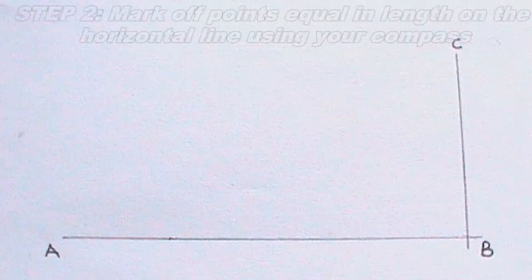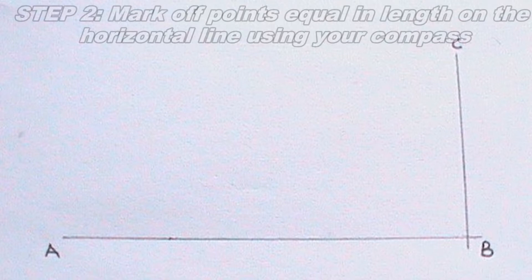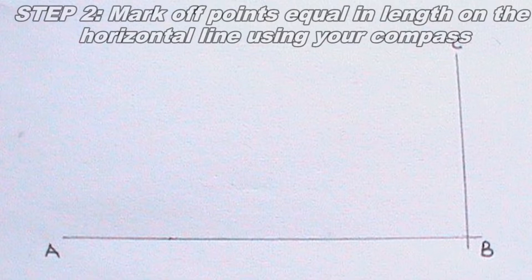The next thing I will do is to mark off points equal in length on the horizontal line using my compass. In this video, I am marking 7 points of length 1 centimeter each because my horizontal line is 8 centimeters.